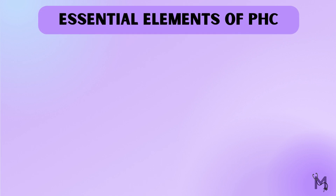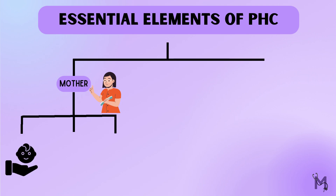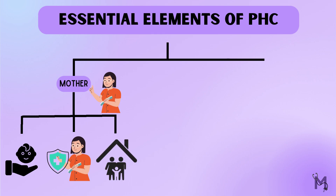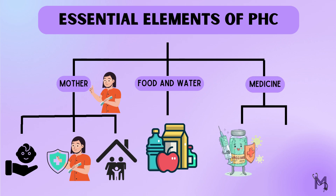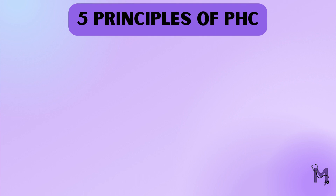Primary health care also includes certain essential elements. Looking at this picture, first it involves a mother who is educated about taking care of her child's as well as her own health, along with educating her about family planning. Next, it is ensured that proper food supply and clean water are made available for the public, alongside ensuring basic sanitation. Lastly, all essential drugs as well as immunizations against infectious diseases must be made available in the primary health care center.